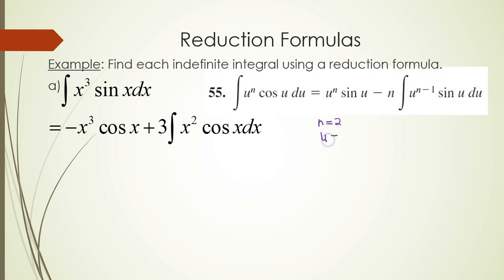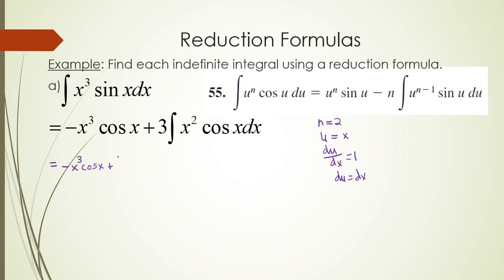We identify our u, which is simply x. The derivative of u with respect to x is 1, so du equals dx. This enables us to use formula 55. We keep the minus x cubed cosine x, and now we have plus 3 times whatever we get when we integrate x squared cosine x. That gives us x squared sine of x minus 2 times the integral of x to the first sine of x dx.